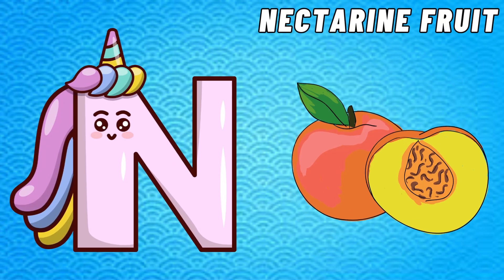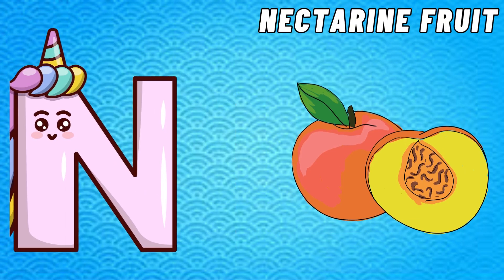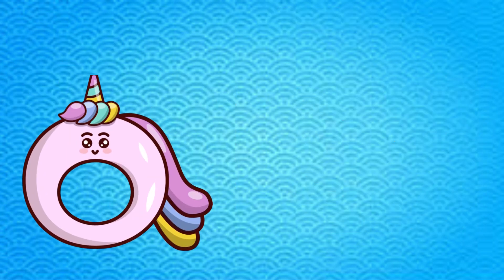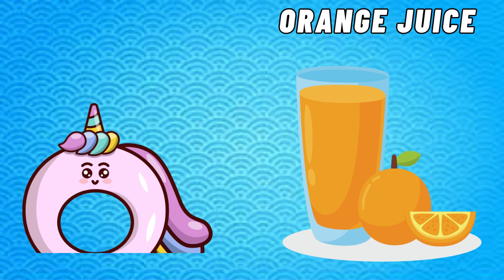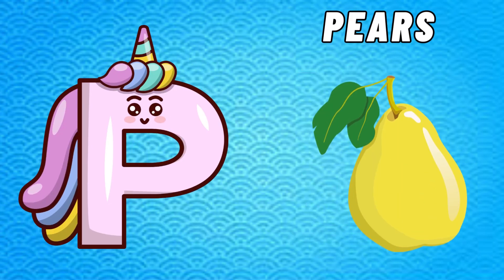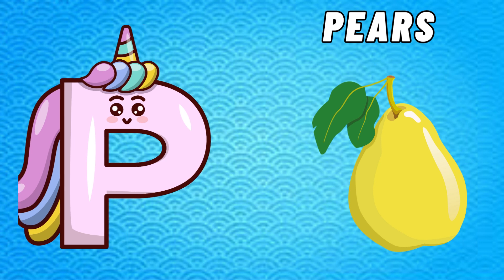N is for Nectarine Fruit. Nectarine Fruit. O is for Oranges. Oranges. P is for Pears. Pears.